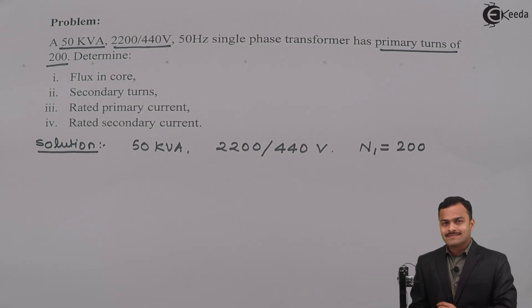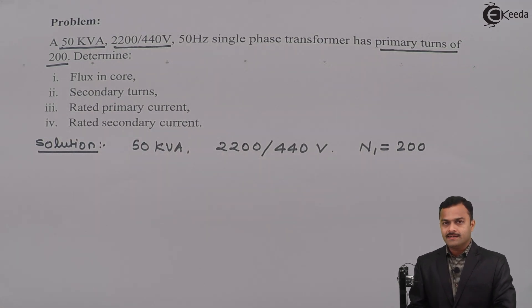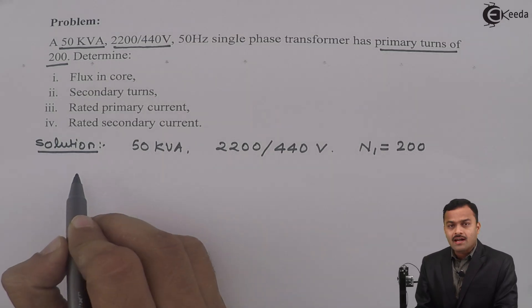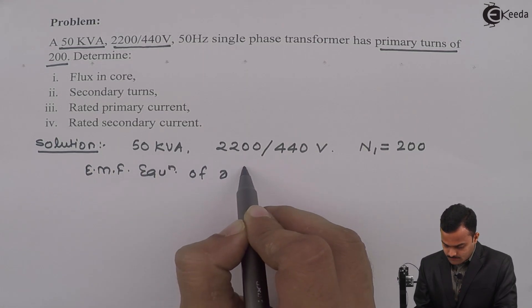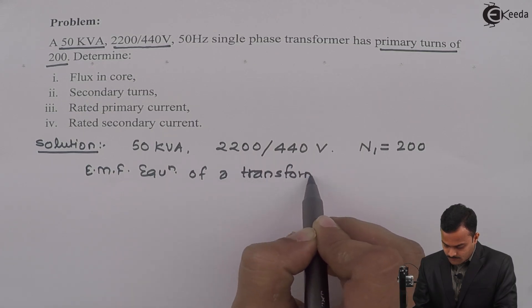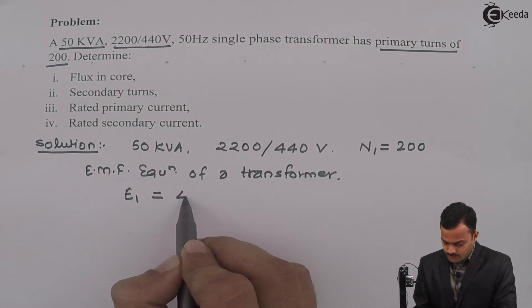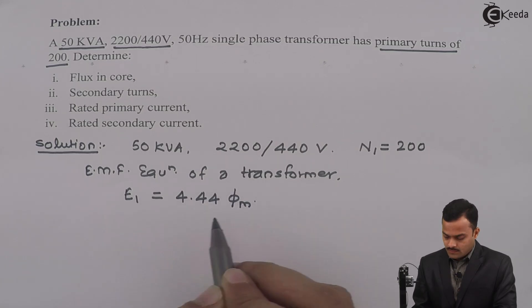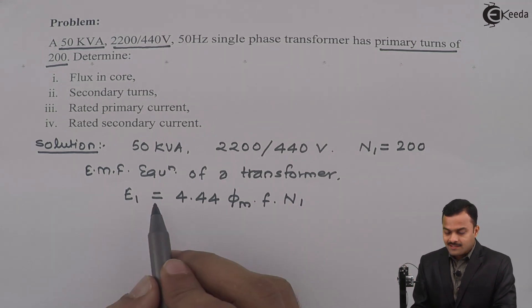How are we going to use these given things to calculate flux, secondary turns, rated primary current, and secondary rated current? First of all, I will write EMF equation of a transformer. So it is E₁ = 4.44 Φₘ × f × N₁.